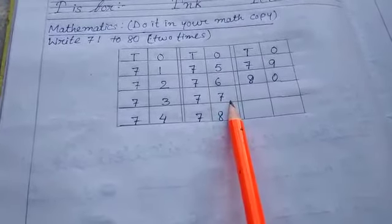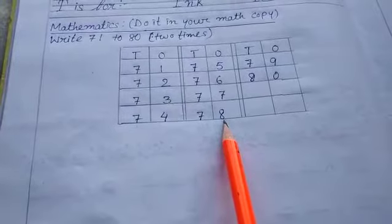77: 7, 10, 7, 1, 77. 78: 7, 10, 8, 1, 78.